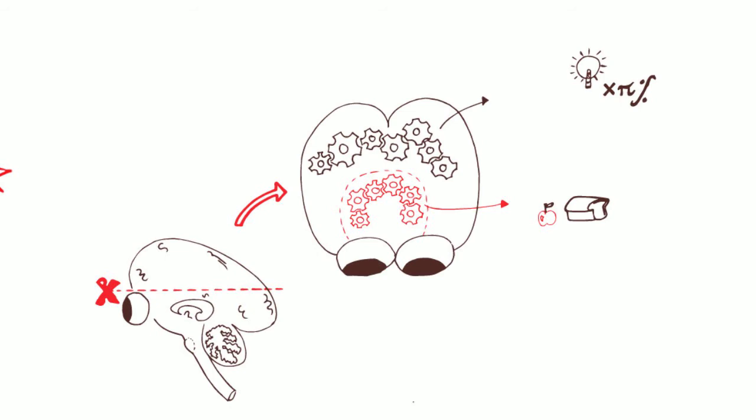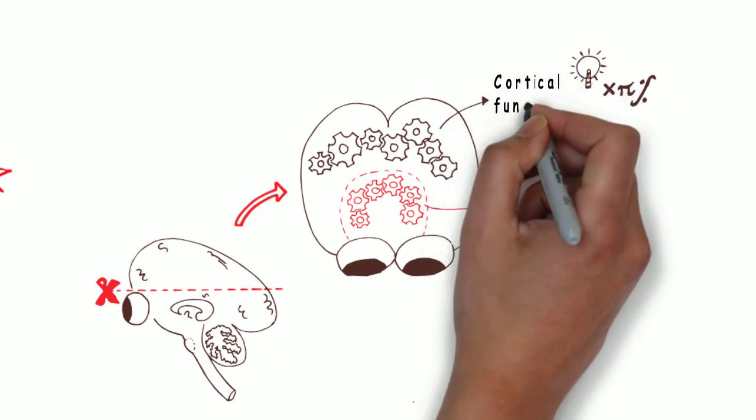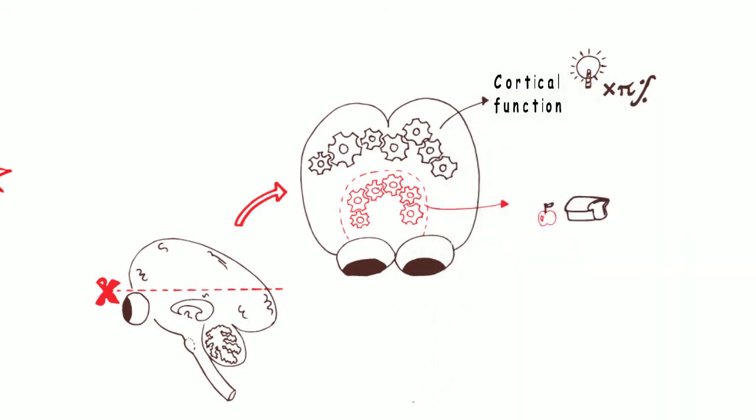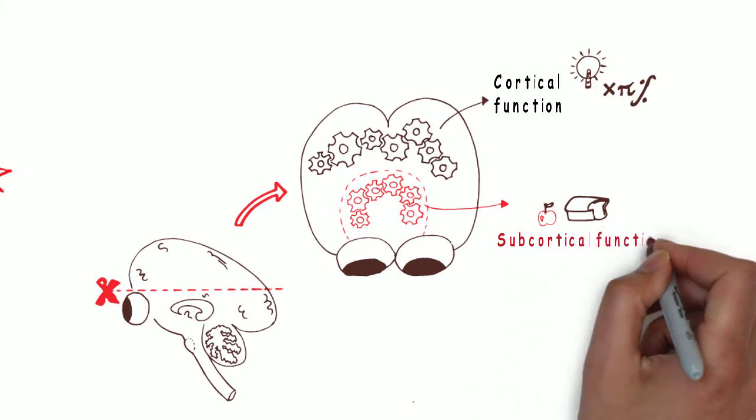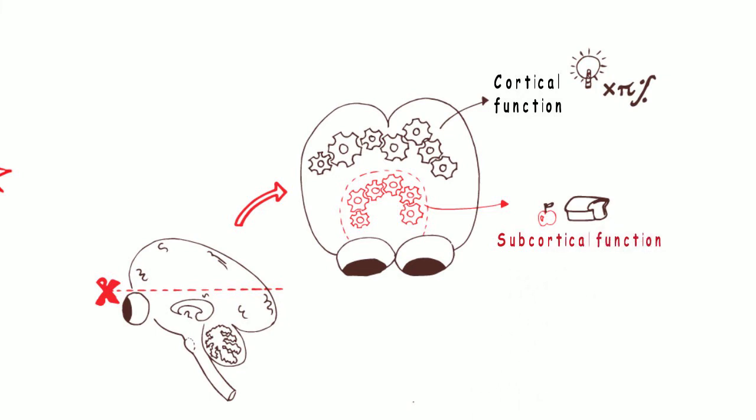When we look at where the hypothalamus is situated, we see that it does not have that much contact with the areas of the brain we use for philosophy or mathematics, also called the cortical areas of the brain. For that reason, it is difficult for somebody to think themselves thin.